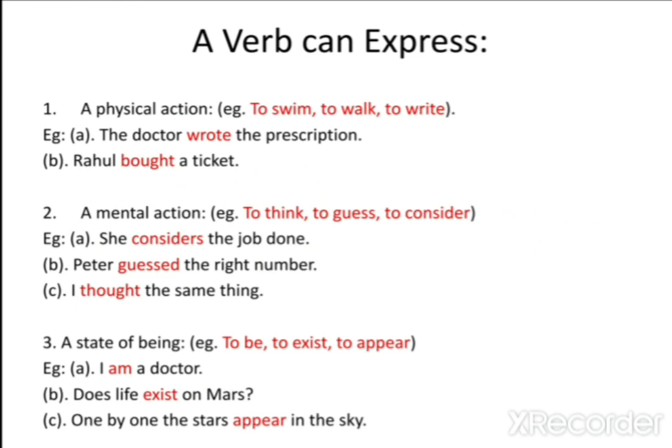A state of being: to be, to exist, to appear. Like 'I am a doctor', 'Does life exist on Mars?', 'One by one, the stars appear in the sky.' So 'am' is the to-be form of the verb — is, am, are, was, were. 'Am' is also a state of being. 'Exist' and 'appear' are also a state of being; they are not a physical action.